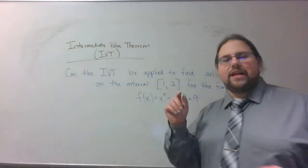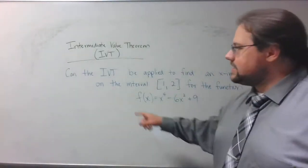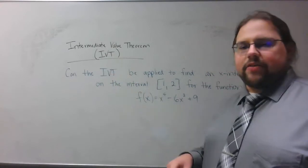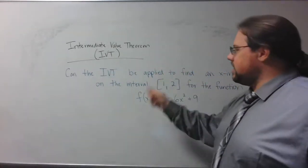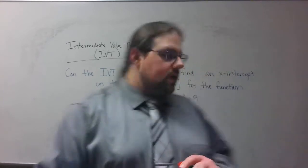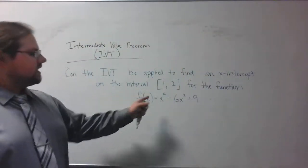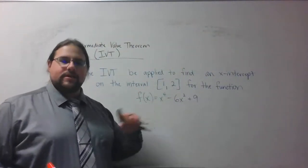Another example of the Intermediate Value Theorem. The question asks: Can the IVT be applied to find an x-intercept on the interval [1, 2] for the function f(x) = x⁴ - 6x² + 9?